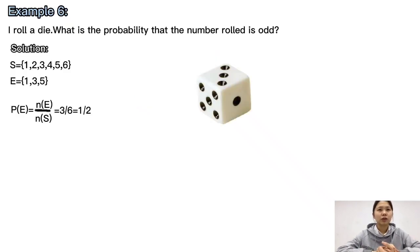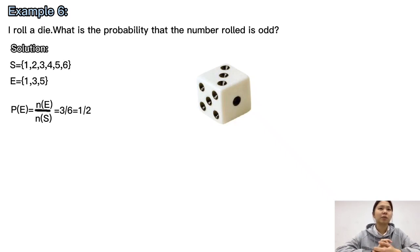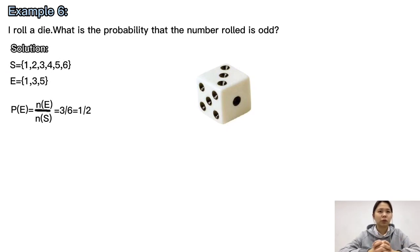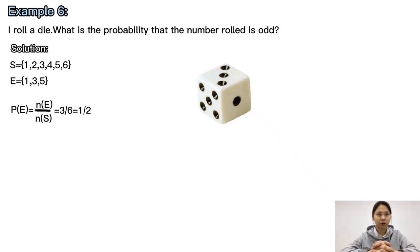Next example: Roll a die. What is the probability that the number rolled is odd? The sample space is S = {1, 2, 3, 4, 5, 6}, and the event that the number is odd is E = {1, 3, 5}. So the probability is P(E) = N(E) / N(S) = 3/6 = 1/2.